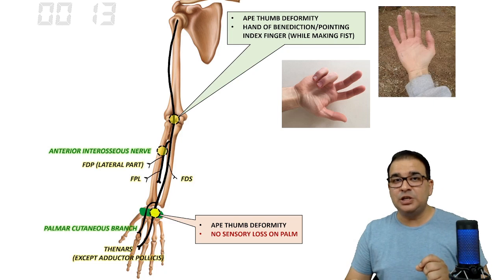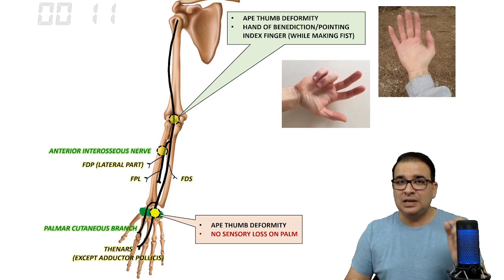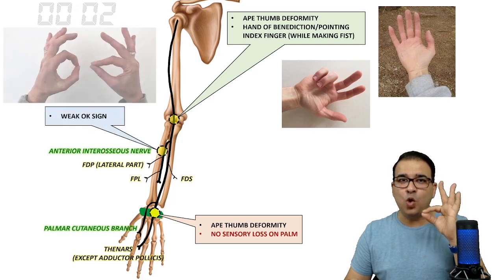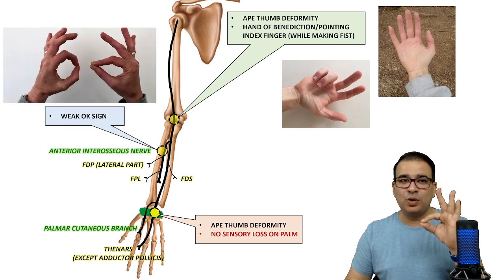Finally, if there is injury to the anterior interosseous nerve, the deep flexors responsible for flexing the distal interphalangeal joint of the index finger and thumb are involved, so there will be a weak okay sign.